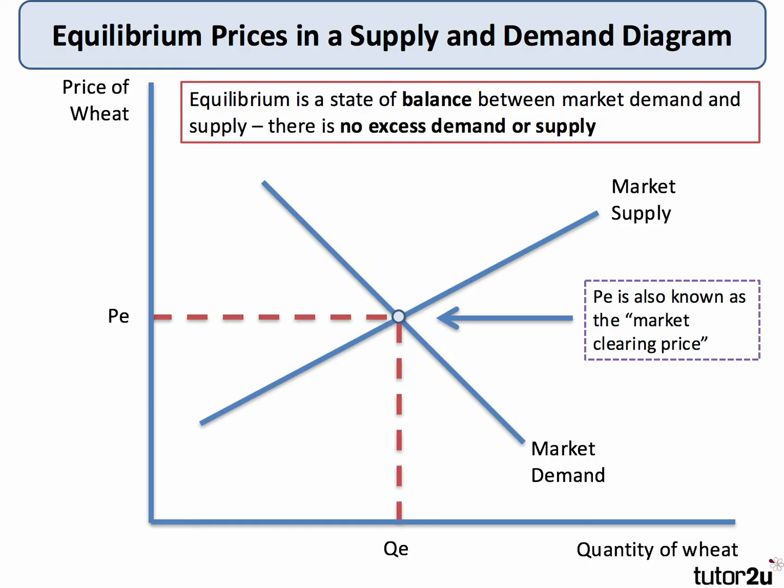We show the equilibrium price in a diagram as the market clearing price. At price PE and quantity QE, there is no excess demand and no excess supply.